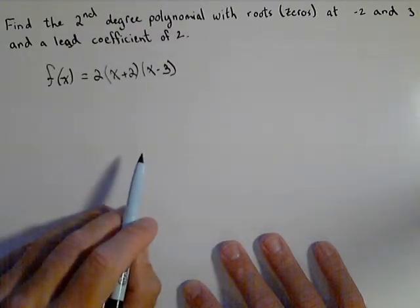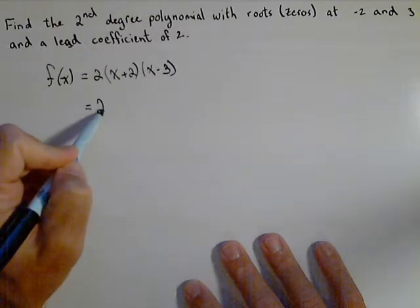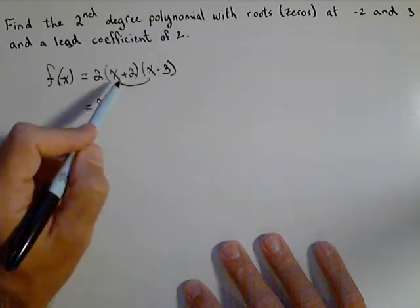We can go ahead and keep this in factored form. If we wanted to multiply it out, we could FOIL.